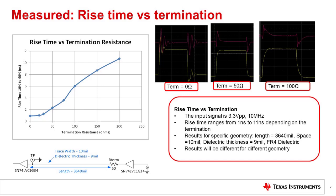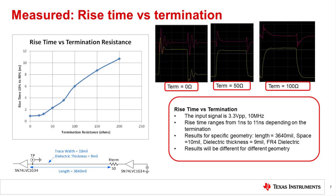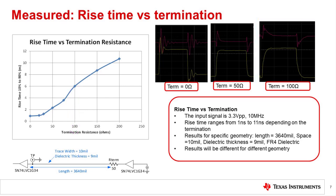The termination resistance will directly impact the signal rise time. For small termination resistances, the signal will rise rapidly and there will be overshoot and ringing. For this circuit, the 0 ohm impedance has a rise time of about 1 nanosecond. When the termination resistance matches the characteristic impedance well, the rise time will be fast but there will be no overshoot and ringing. For this circuit, the 50 ohm impedance has a rise time of about 2 nanoseconds. For very large impedances, the undershoot decreases the rise time — in this case, 100 ohm impedance has a 6 nanosecond rise time.